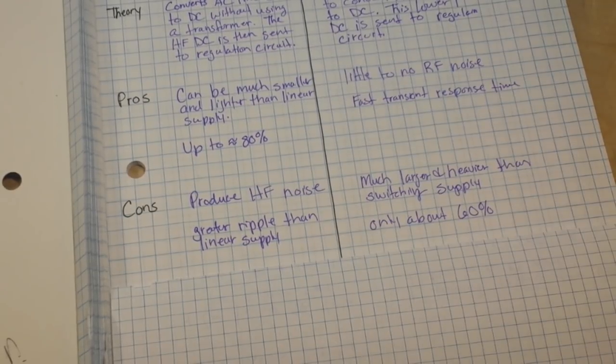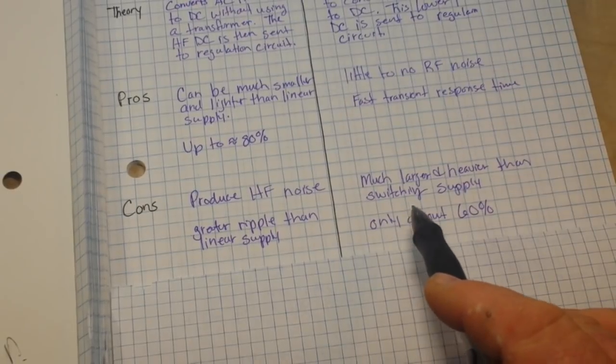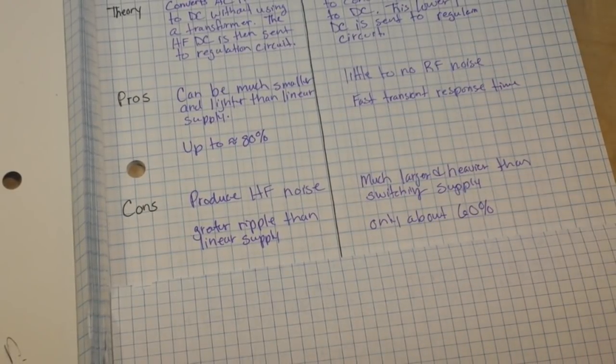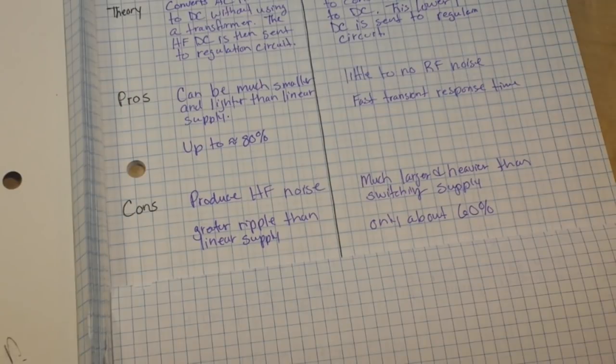But it doesn't mean it's a bad supply. Your linear supply is much larger and heavier than your switching supply, so generally you don't want to be carrying it around with you. And it's only about 60% efficient. So you can see they each have their trade-offs, their pros and their cons. They each have their uses.